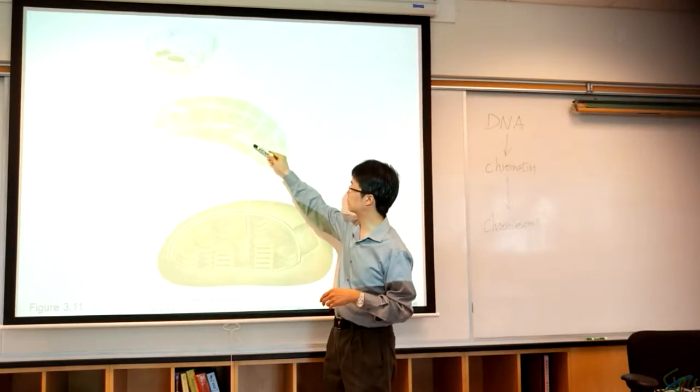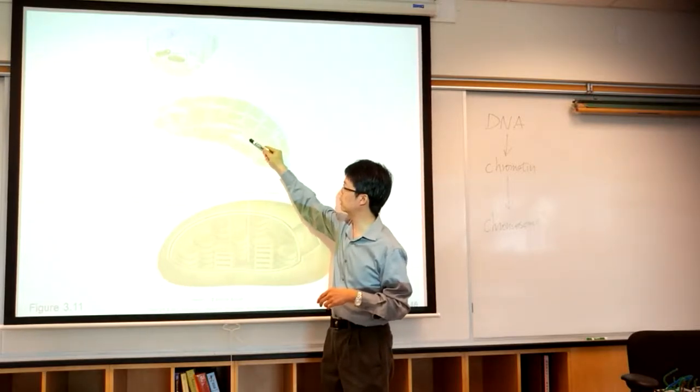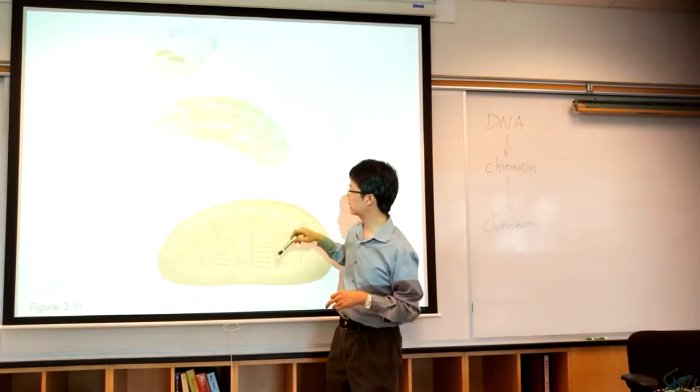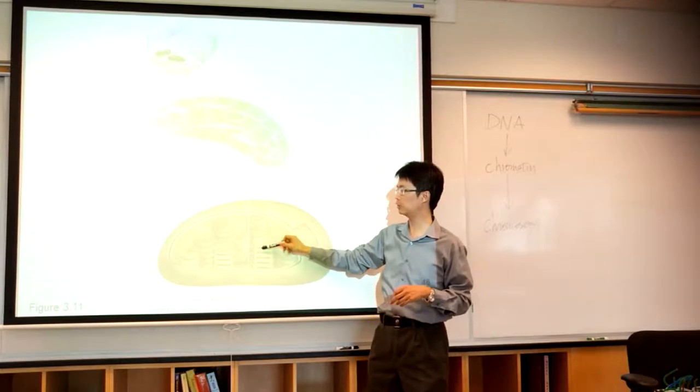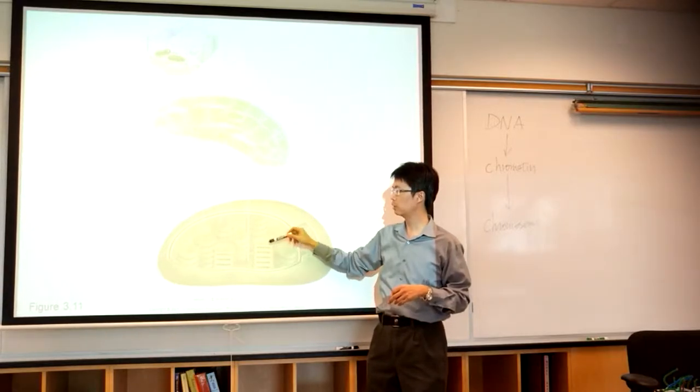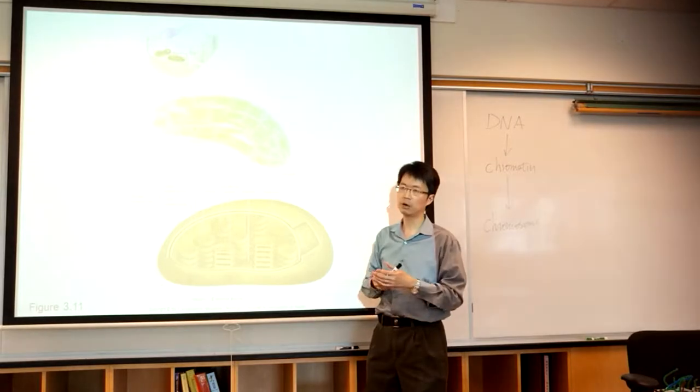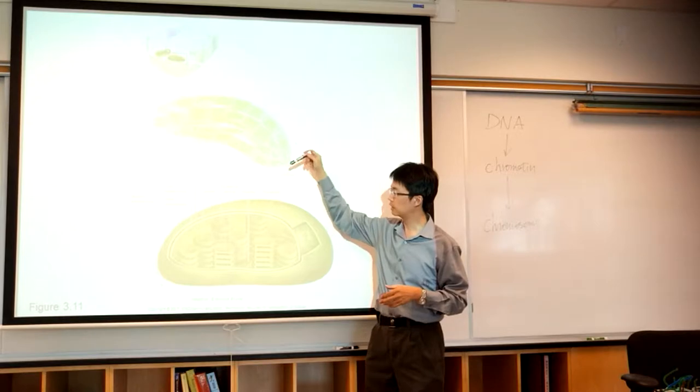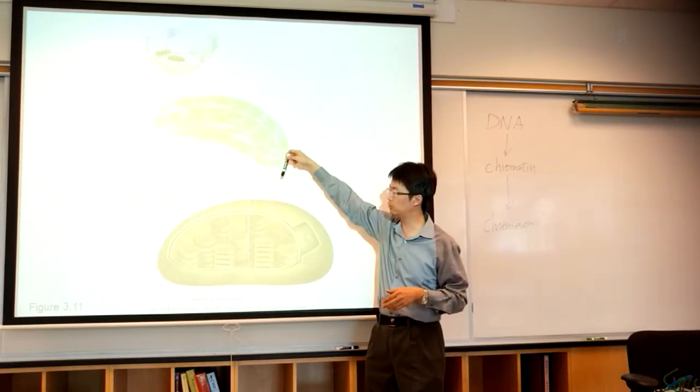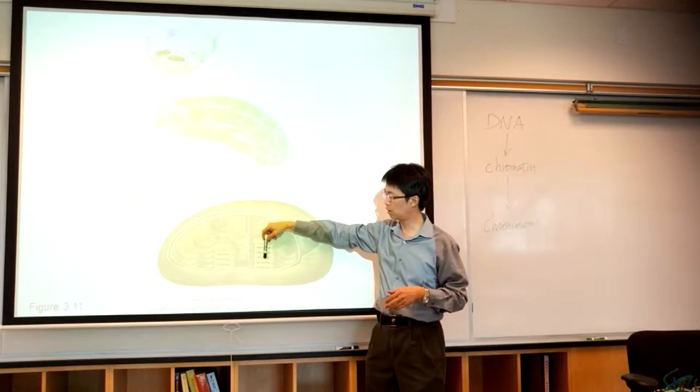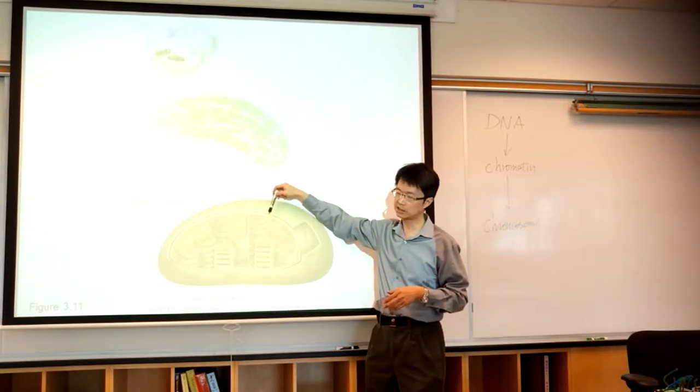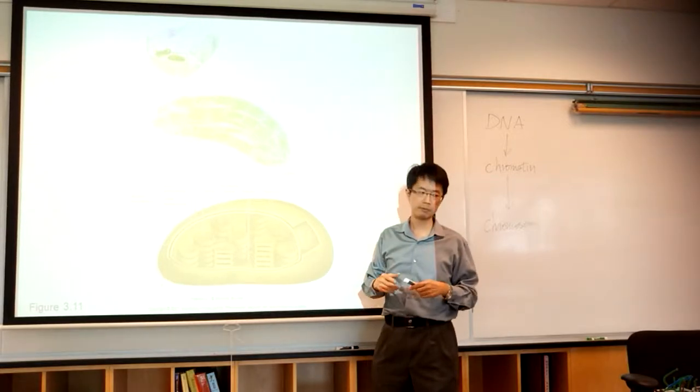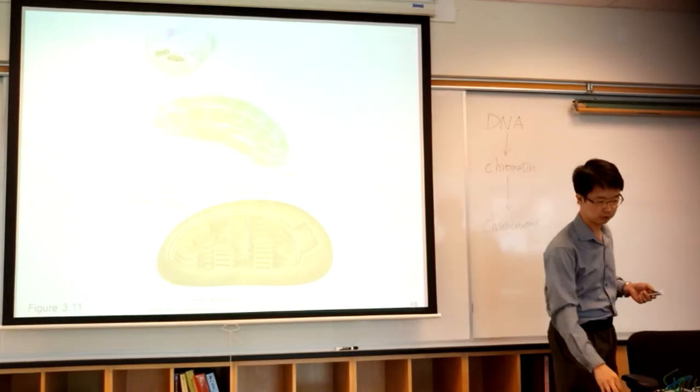Stroma is the space or the fluid filled inside the chloroplast. In each thylakoid, in each poker chip, you have the pigment that will trap the sunlight, the solar energy. You want to have a stack of it because the sunlight goes through it, it will go through each thylakoid so that you can stimulate all the pigment in each stack, so that you will have maximum absorption of the sunlight to do photosynthesis.